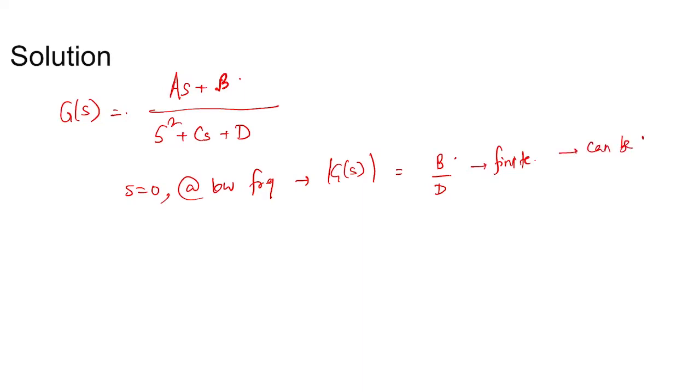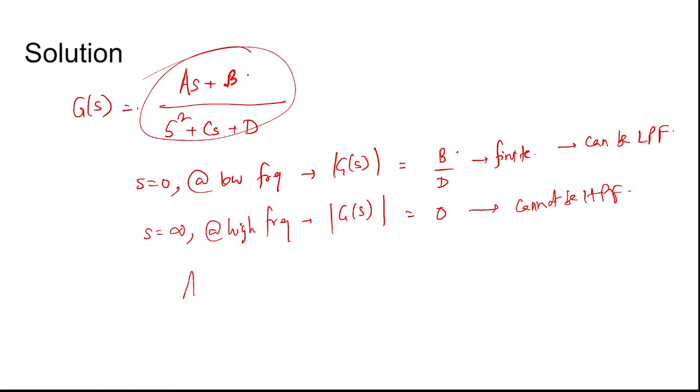However, if s is infinity (at high frequencies), the magnitude of G(s) becomes zero. So it cannot be a high pass filter. Moreover, if B equals zero, C equals zero, and D equals zero, the filter structure would resemble an integrator.